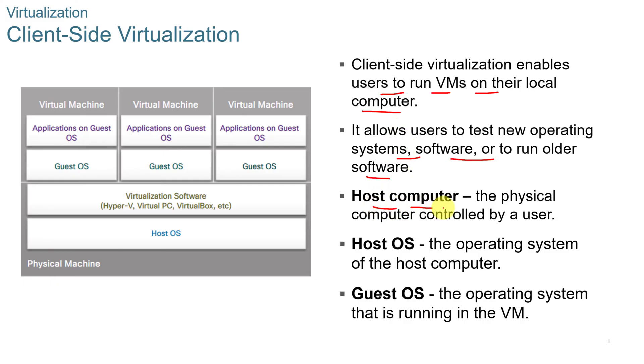Local or client-side virtualization allows for a wide range of operating systems to be run. You have a host computer, which is the physical computer controlled by the user, and a host operating system, which is the operating system of that host computer. Then you have guest OSs — those are the operating systems running on the VMs.